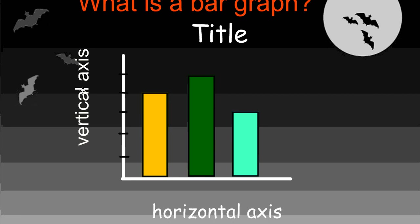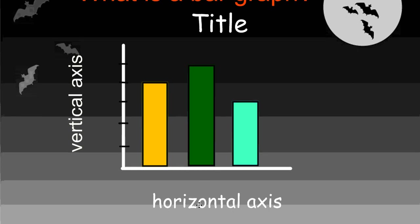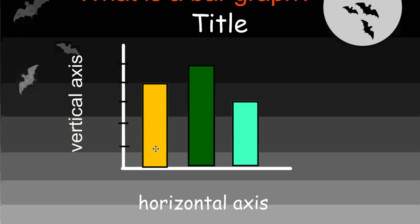Next, you'll see a vertical axis. This vertical axis over here is usually labeled with numbers and those numbers will tell us how often something will occur. At the bottom, you'll find a horizontal axis. This horizontal axis often has some type of category or a value of some sort that it's comparing. For instance, we have one bar here, another bar here, and another bar here.